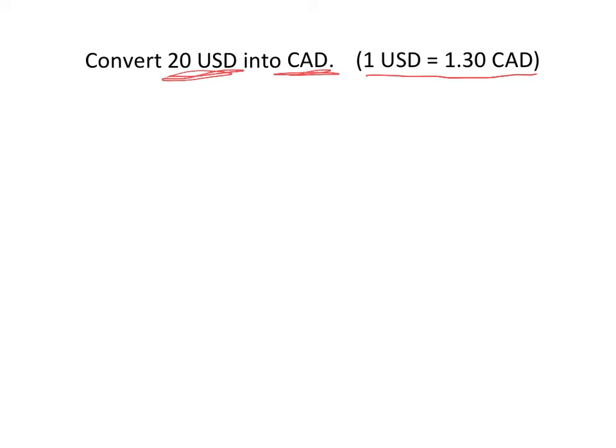We always start this by writing down what we're trying to convert. So we're going to write down 20 U.S. dollars. That's our starting point. We have not touched this yet. This is sort of just, if we go to the bank, this is what's written on the wall. What I'm actually converting is what I'm bringing to the bank.